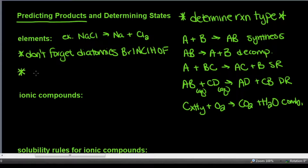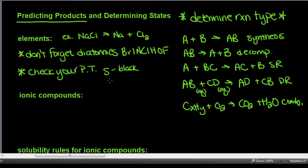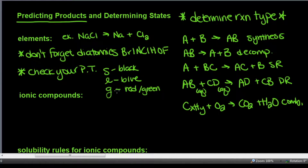To figure out states of matter for your elements, check your periodic table. Depending on what periodic table you have, the color key might be slightly different — solids tend to be black, liquids tend to be blue, and gases may be red or green. Just double-check the legend. The state of matter will always be identified on the periodic table. For example, sodium is a metal, so its state of matter is solid. And chlorine — Cl2 — is a gas on the periodic table.